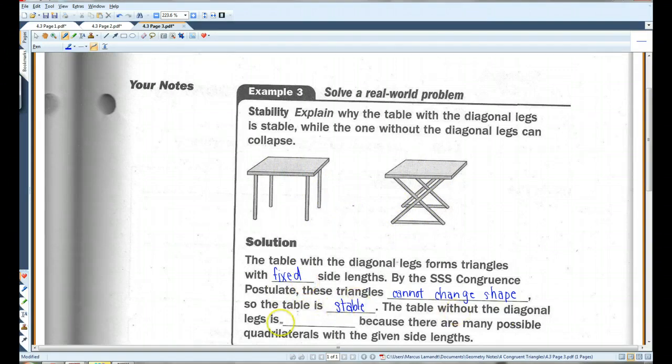The table without diagonal legs is not stable because there are many possible quadrilaterals. Remember, quadrilateral has four sides with these given side lengths. I could shift this this way or that way, change these angles, and get different quadrilaterals with these same side lengths. That's why this is not considered stable. And this one is.